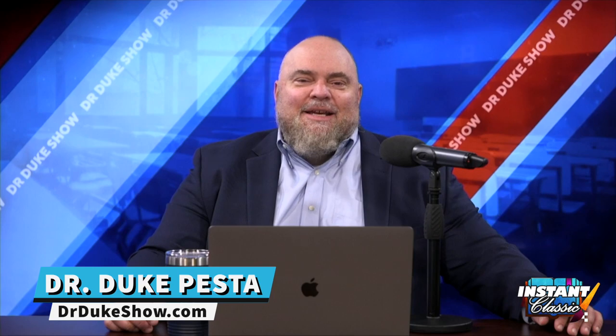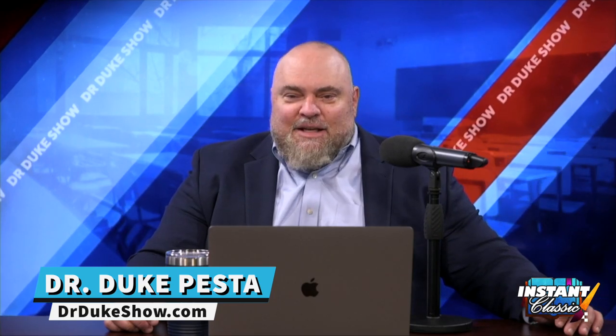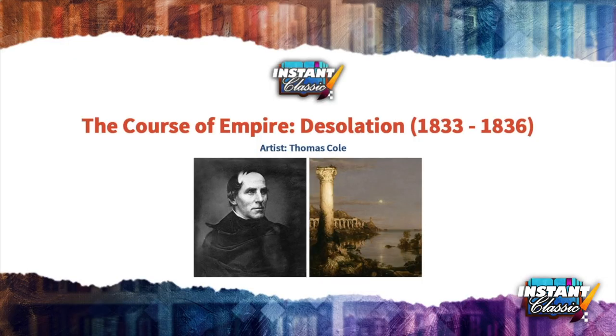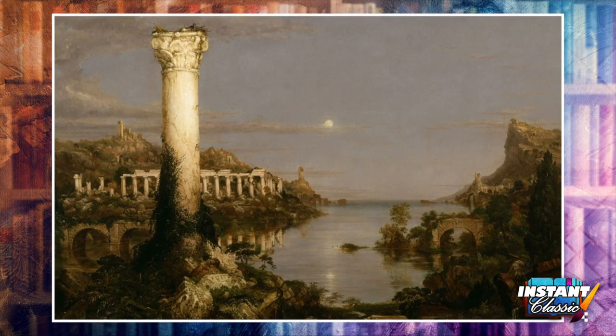It's time for some real education. The Course of Empire: Desolation — Thomas Cole's final painting in his series. We've been talking about the Course of Empire: what happens to a country that starts off as a small country with a good idea, like America did, that ultimately gives way to empire, and empire ultimately gives way to destruction and desolation. Take a look at the last picture in the series. This one is called The Course of Empire: Desolation.